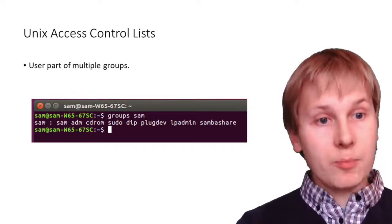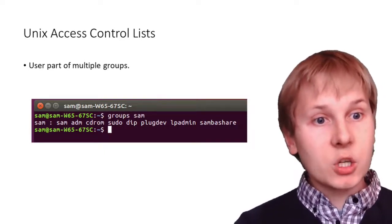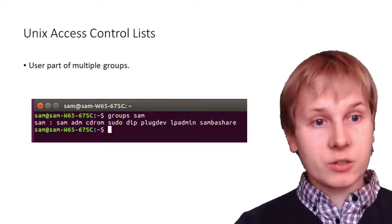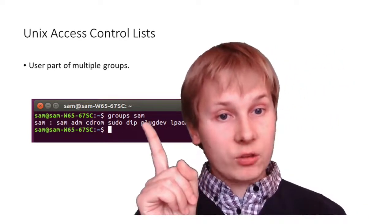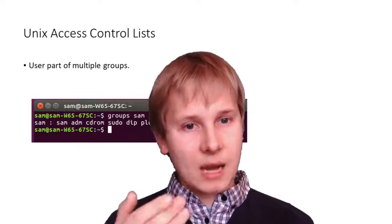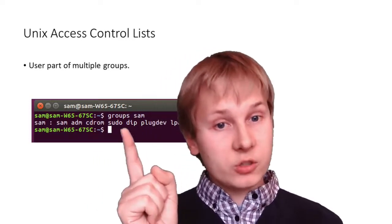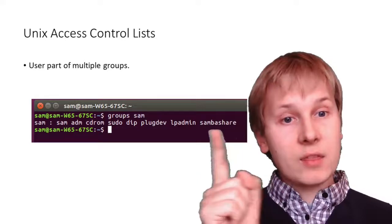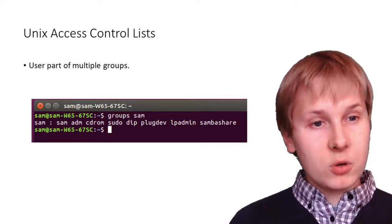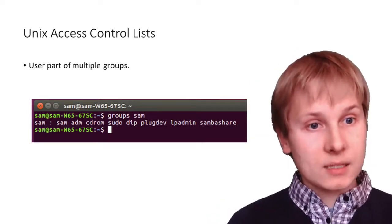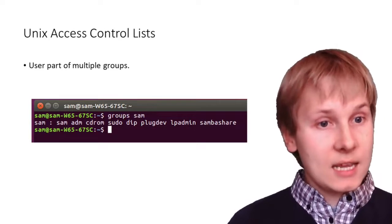Users can be part of multiple different groups — someone could be part of the accountancy group, the system security group, and the administrators group simultaneously. Running 'groups sam' shows groups like sam, cdrom (allowed to use the CD), sudo (admin privileges), and others broadly representing capabilities for file sharing and printers. These are effectively groups of permissions attached via a group in an easy-to-manage way.